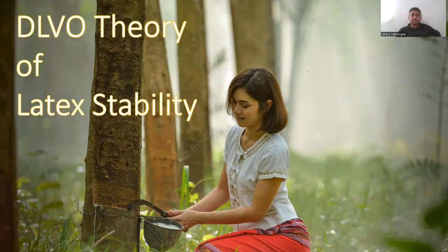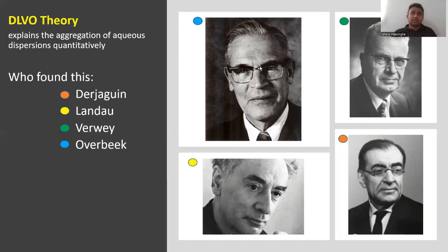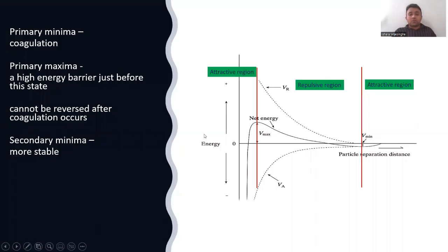DLVO theory explains the stability of latex. The name comes from four scientists: Derjaguin, Landau, Verwey, and Overbeek. This theory explains how coagulation and destabilization take place — that is, aggregation of aqueous dispersions. They quantified this process.